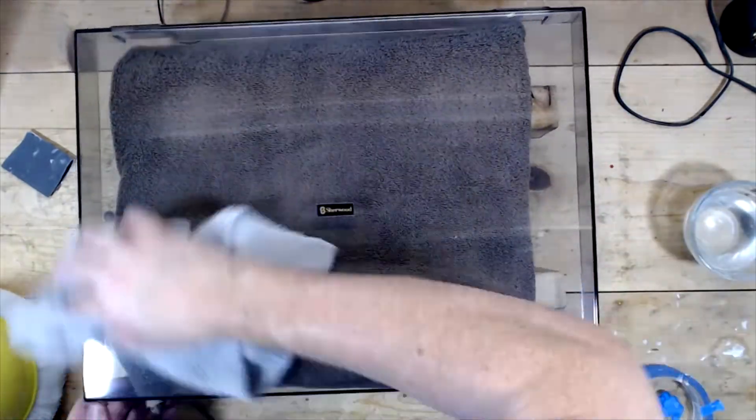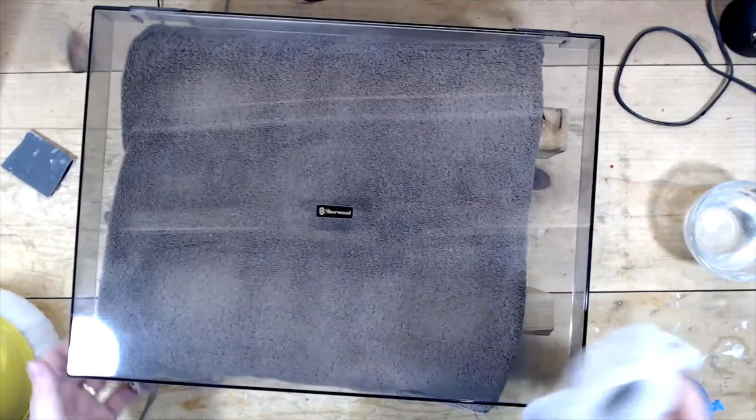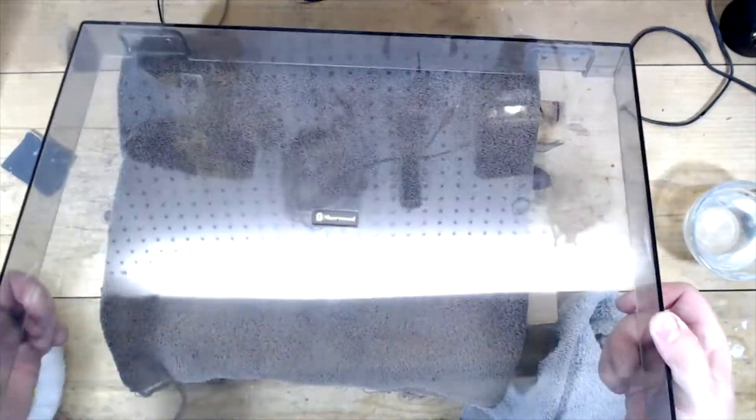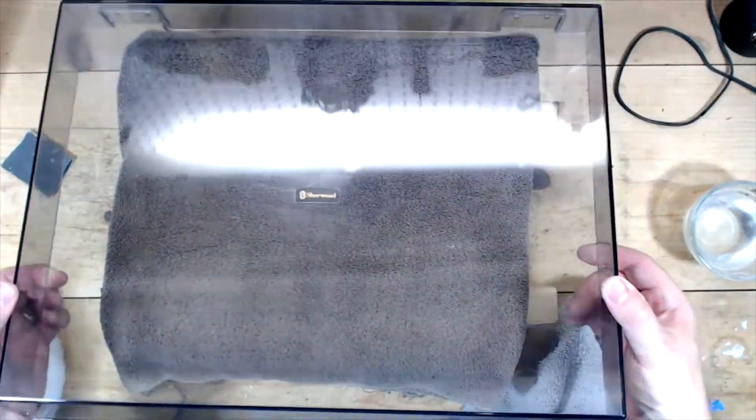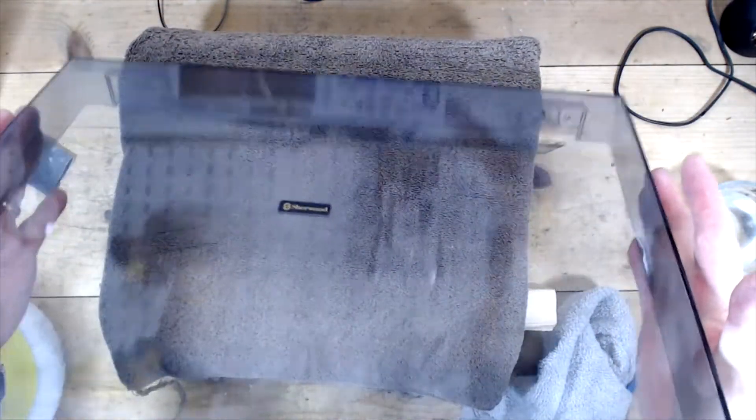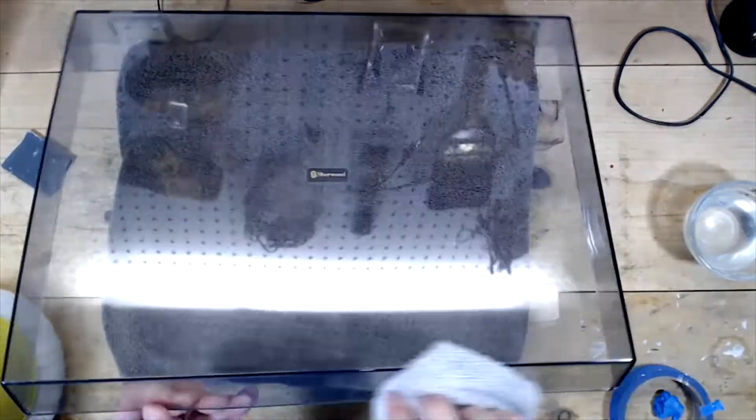Now if this were a high-end turntable, or if I wanted to try to get every imperfection out, I mean you just kind of rinse and repeat everything that I did, right? So instead of two passes with the sandpaper, maybe you do six passes with the sandpaper, and you just kind of keep going until you get out—or you hide really, because you're just kind of hiding the scratches—hide the scratches as much as you can.